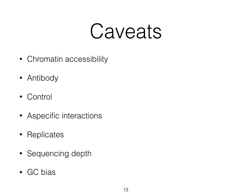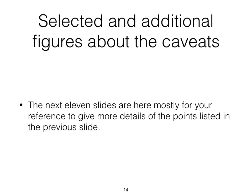Then, as Nat mentioned already this morning and in line with classical experimental methodology, the use of adequate controls and replicates is essential. As with all sequencing methods relying on an amplification step, there will be a bias towards GC-richer sequences. Finally, the outcome will be affected by the depth of sequencing. The next 11 slides are here mostly for your reference, to give more details of the points listed. In this video I will work quickly through most of them, but come back later once the lecture is over and take the time to read them.